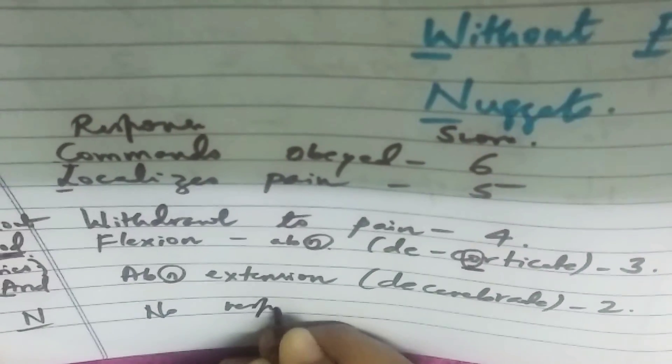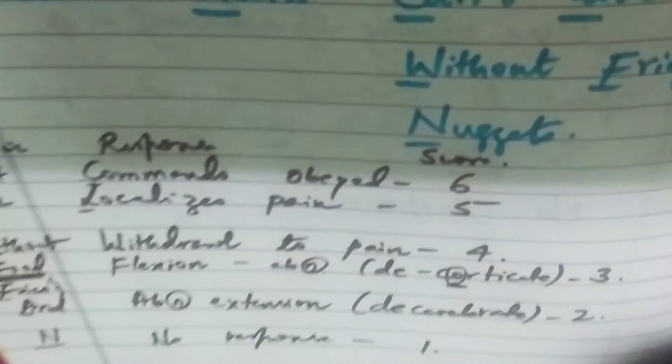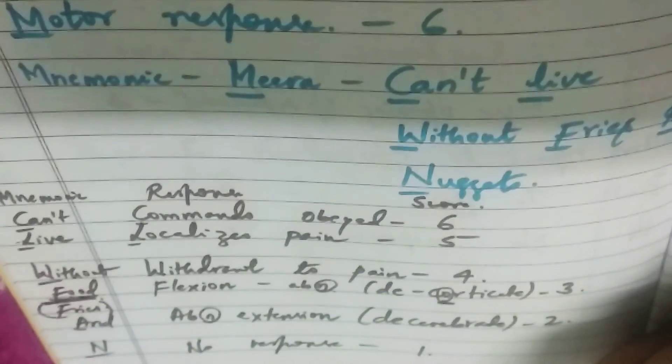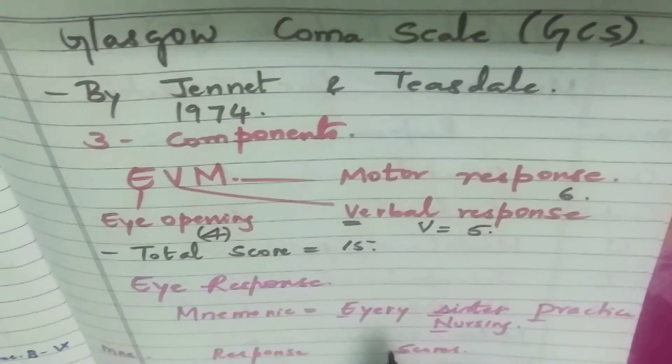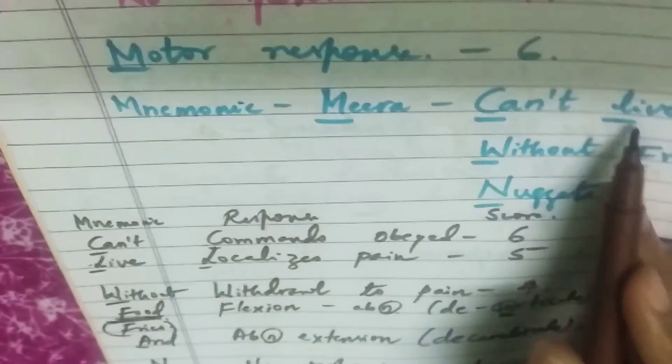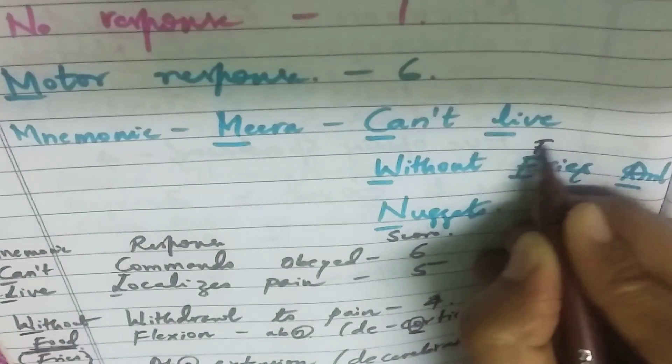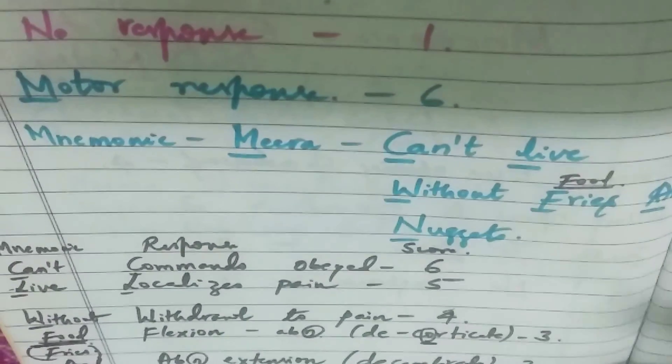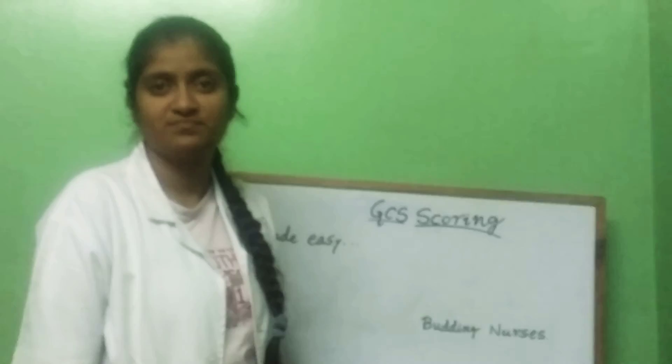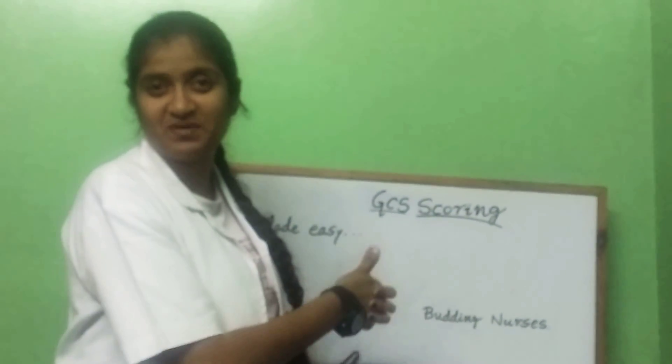So friends, all together it should come 15 maximum for a conscious or oriented person, and a minimum is three. So please do remember the mnemonic. That is, for eye response, it is every sister practice nursing. For verbal, it is five, and it is our cricketers win. And coming to the motor response, it is six, and it is mirror can't live without fries or food. You can write it as food also for better understanding, and nuggets. So here it is, friends, and a minimum of three and a maximum of 15 you can give, friends. And you cannot do this for an unconscious patient. Please do like, share, and subscribe to your channel, and I hope it would be helpful for you. Thank you.